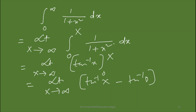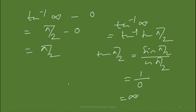The way to work out this integration is to take the limit as x tending to infinity, and put capital X in the place of infinity, keeping the integral the same. We find the integration — the integral of 1 by (1 plus x squared) is tan inverse x — and put the limits 0 and capital X, giving tan inverse X minus tan inverse 0. Taking the limit, tan inverse 0 is 0, and tan inverse infinity equals tan inverse (tan pi by 2), which is pi by 2.